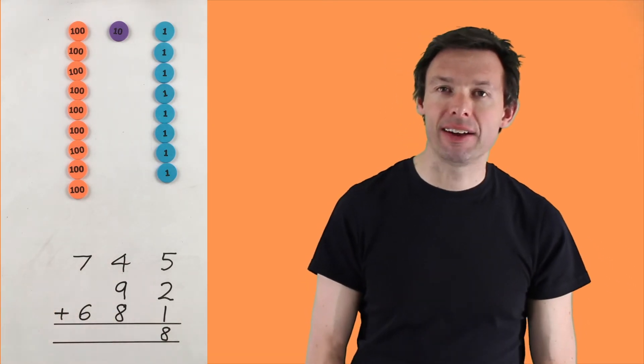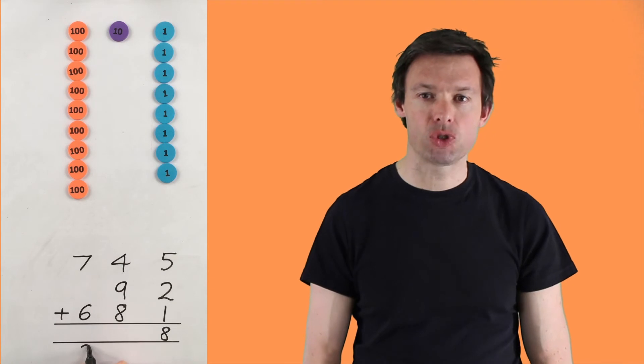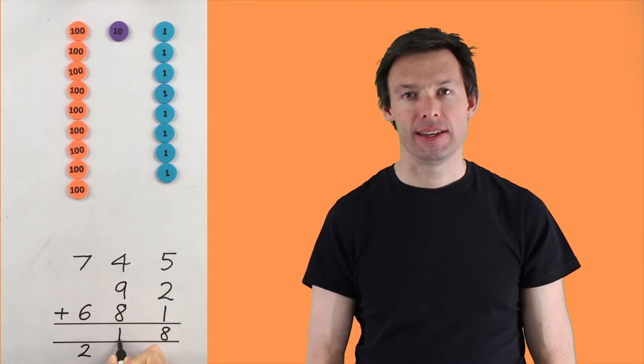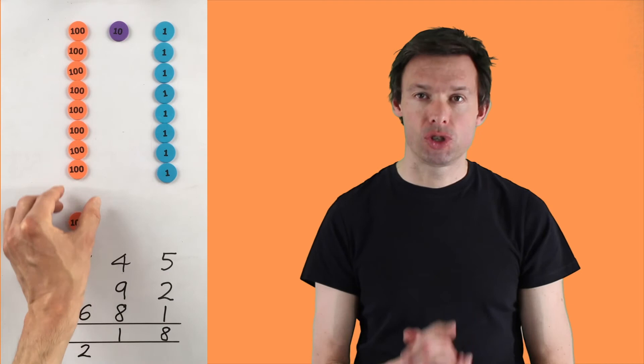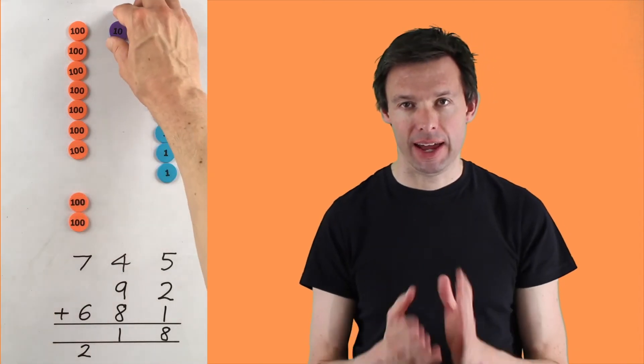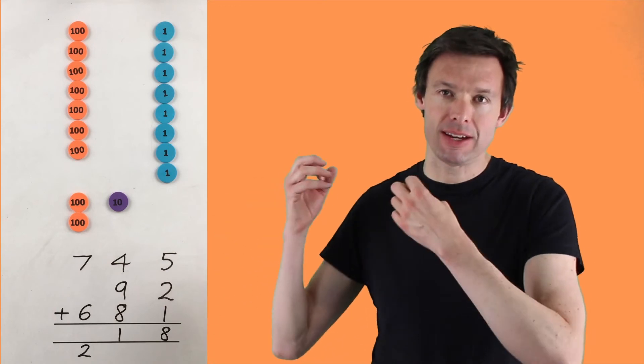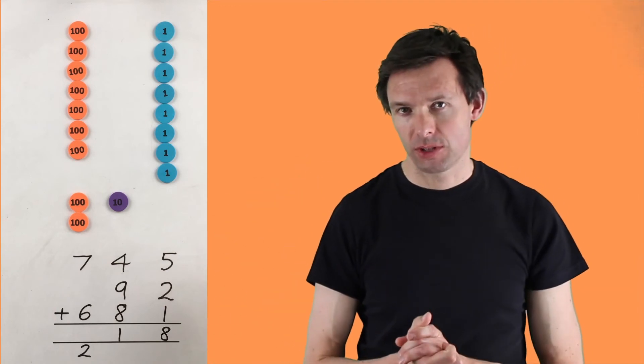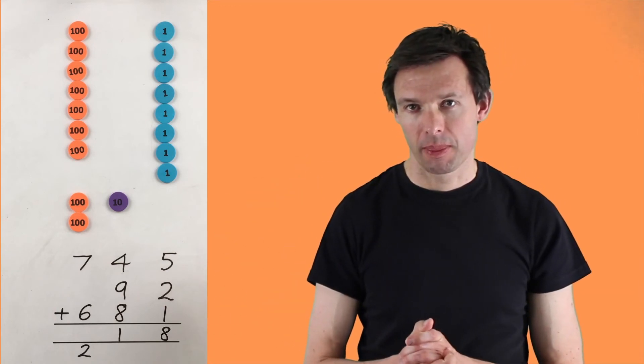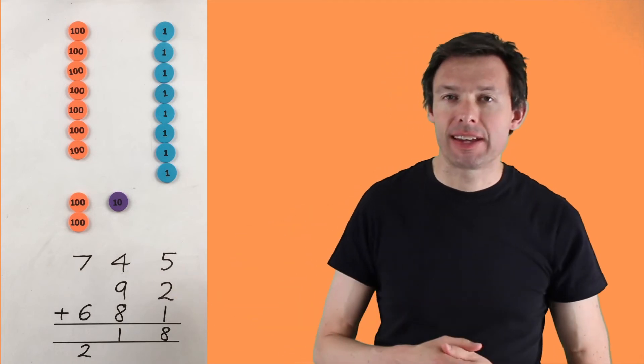So what did we do? We did 4 tens add 9 tens add 8 tens, and we got 21 tens, which is the same as 200 and 10. So in this example, we had to carry the 2 into the hundreds column. I'll let you finish off the rest of this calculation yourself. I'm sure you'll find that nice and straightforward.